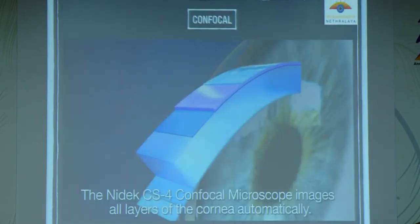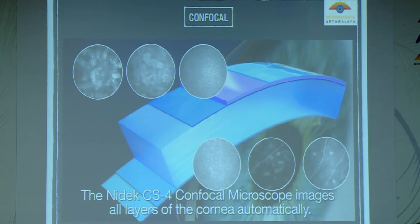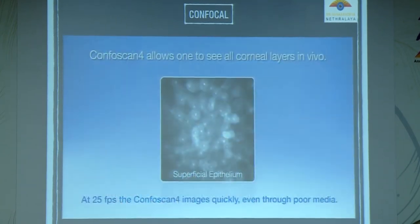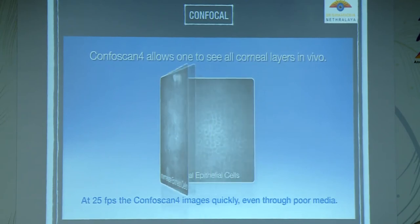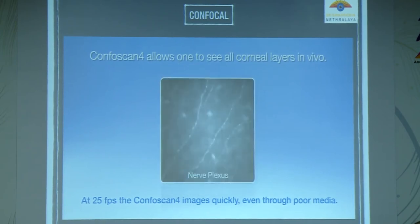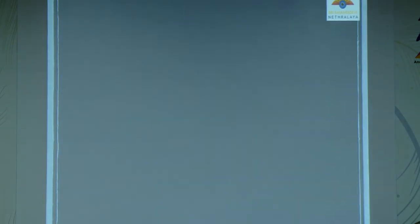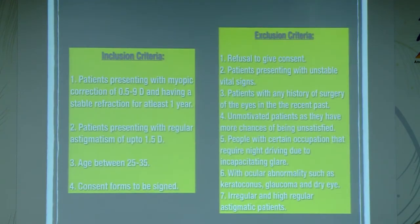In vivo confocal microscopy allows visualization of all layers of the cornea in detail, scanning epithelial layer, intermediate and basal epithelial cells, nerve plexus, stroma, and stromal keratocytes. The study was conducted at Sri Shankar Dev Nidralaya, Guwahati — a prospective non-randomized observational study over two years including 80 patients undergoing myopic LASIK with stable refraction for at least one year. Inclusion criteria: myopic correction 0.5 to 9 diopters, regular astigmatism up to 1.5 diopters, age 25–35 years.